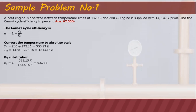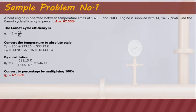Substituting these temperatures into the Carnot cycle efficiency formula gives 0.6755. Multiplying by 100% gives a Carnot cycle efficiency of 67.55%. This means that for a heat engine operated between these temperature limits, the highest efficiency obtainable is 67.55%. No matter how much you try to improve the system, you cannot exceed this value, and in fact, 67.55% is a very ideal efficiency that cannot be obtained in actual operation.